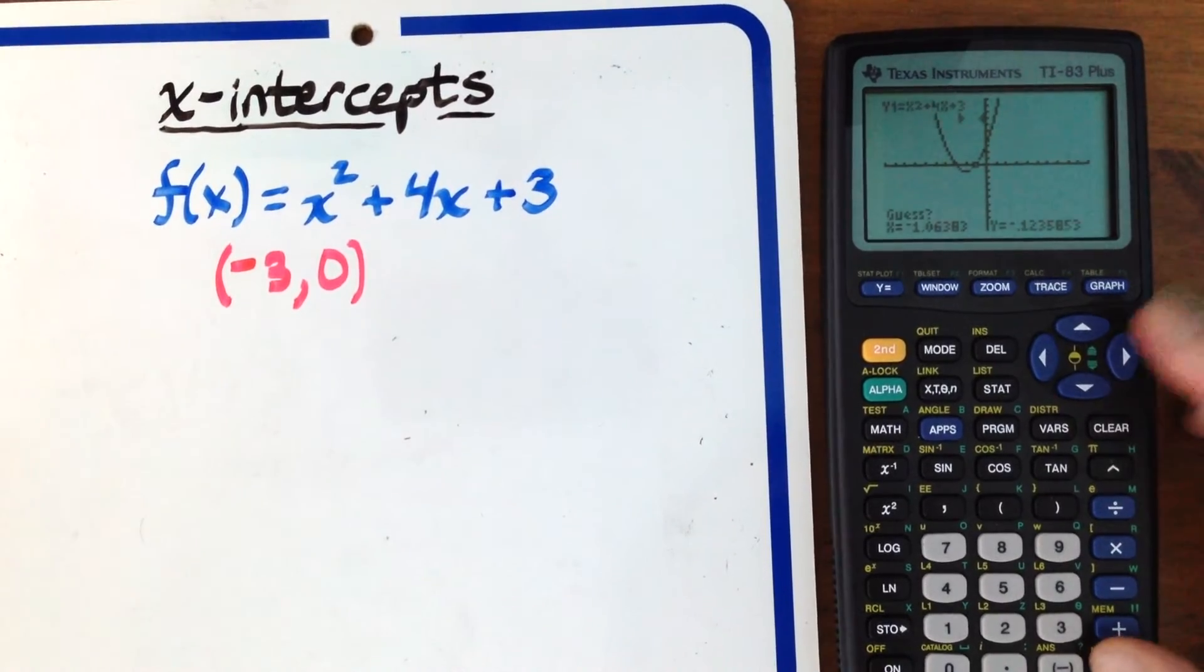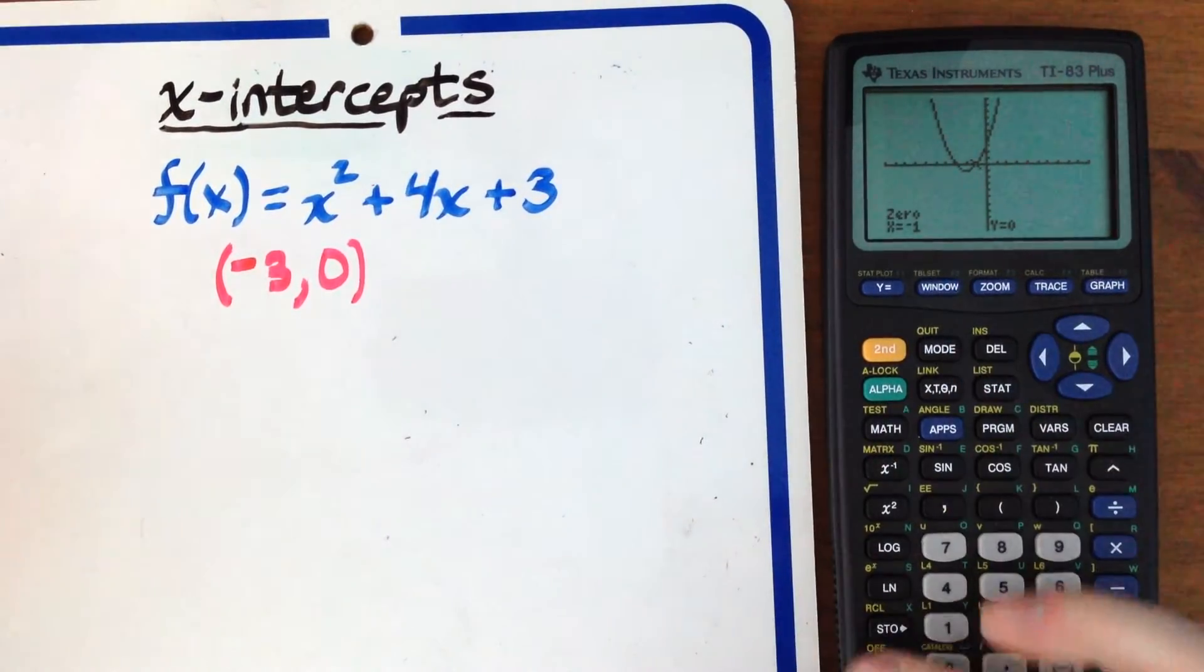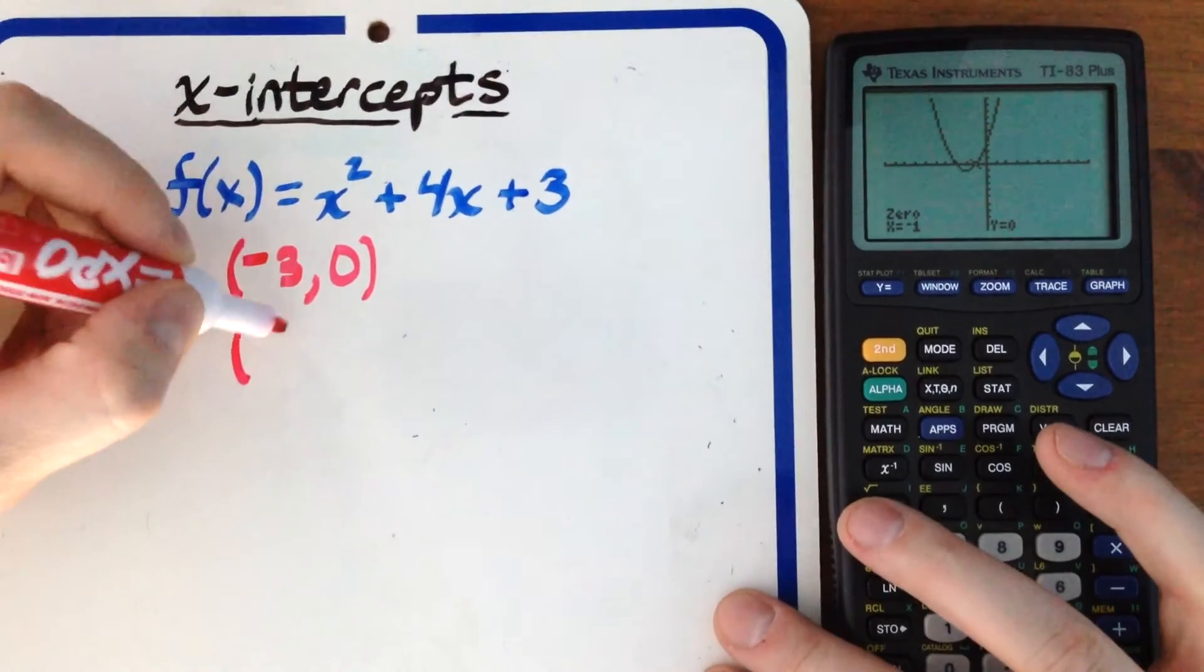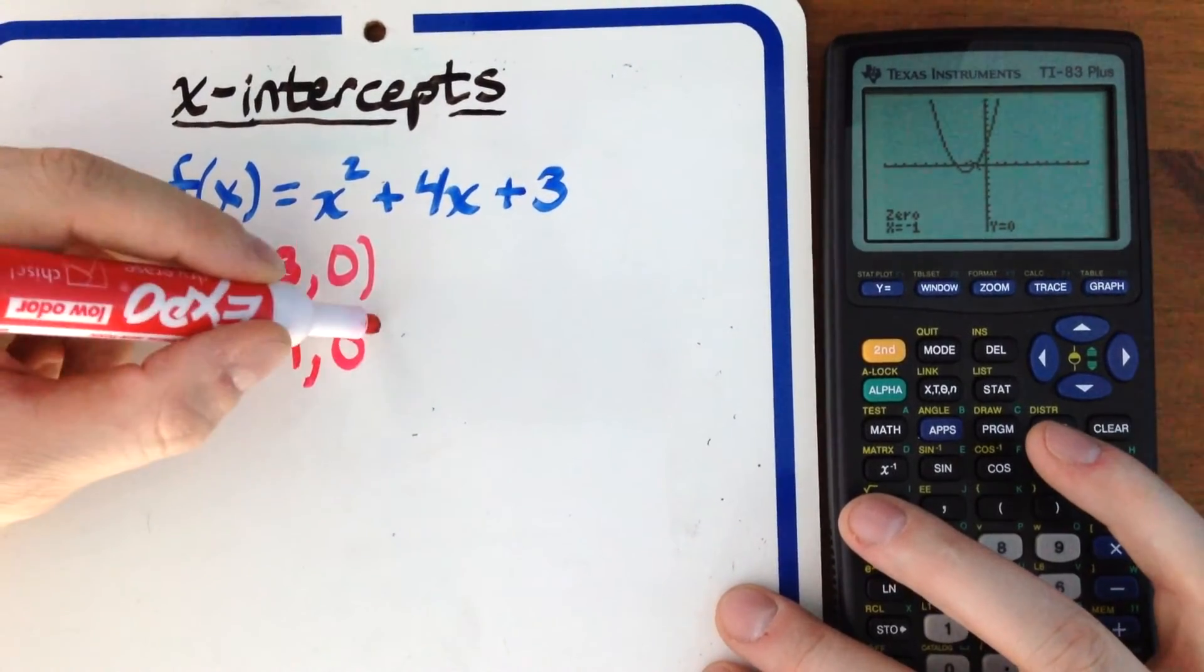Then guess somewhere in the middle. It doesn't actually matter. Press Enter, and it shows negative 1, 0, which is the other x-intercept.